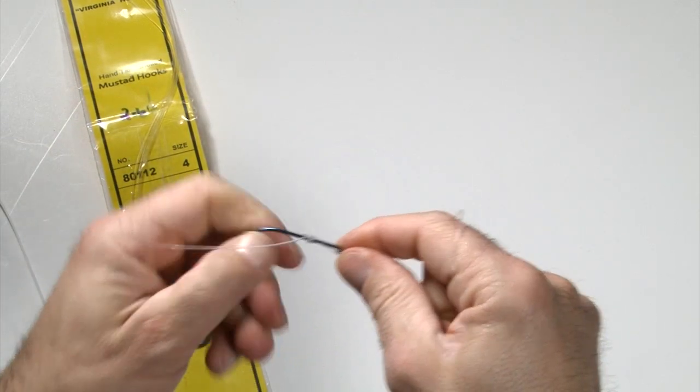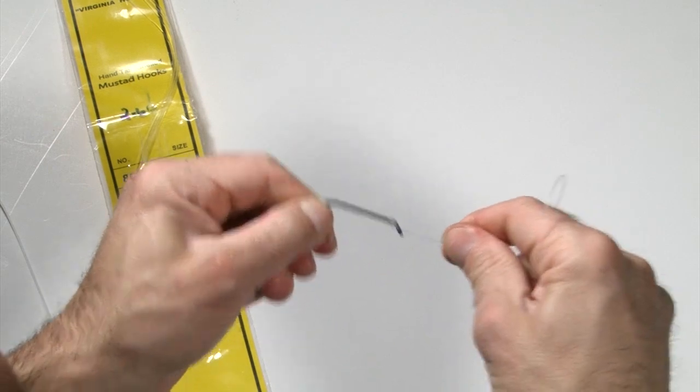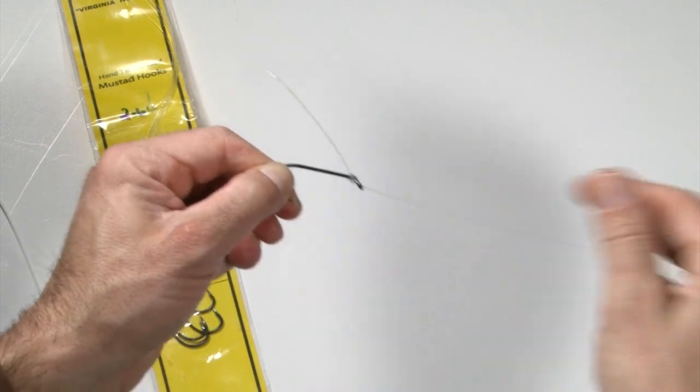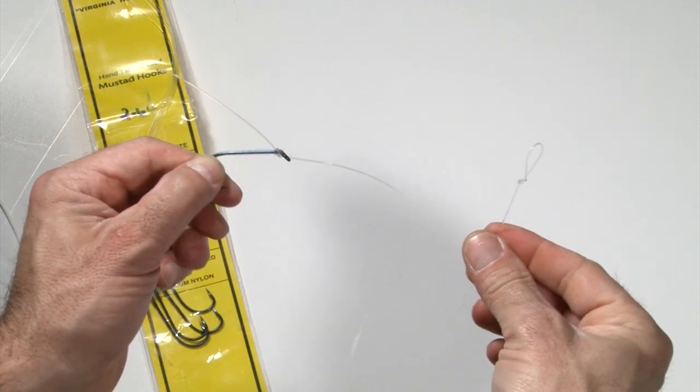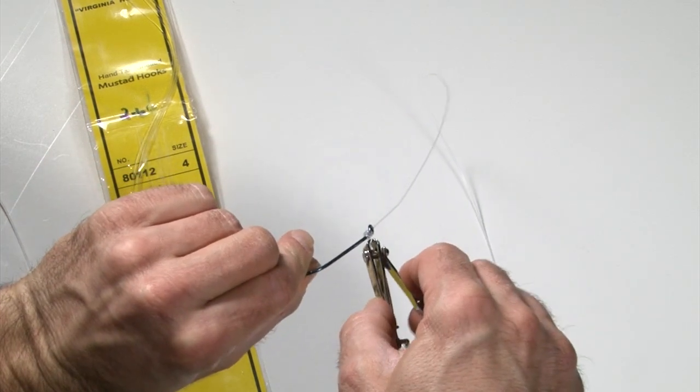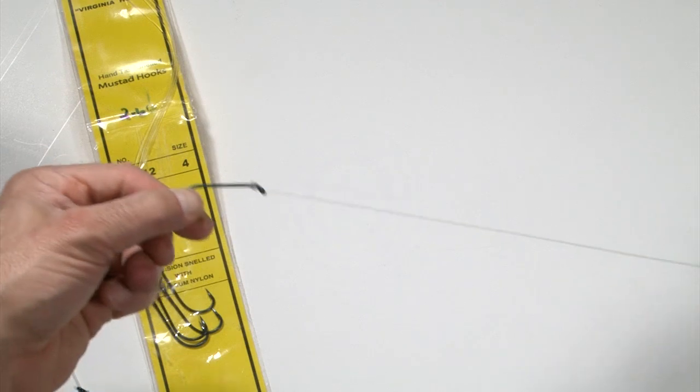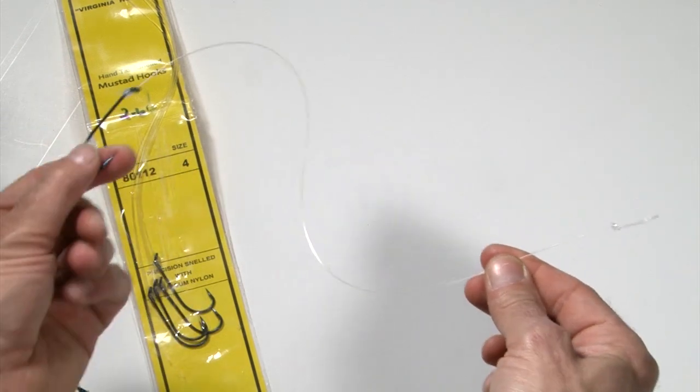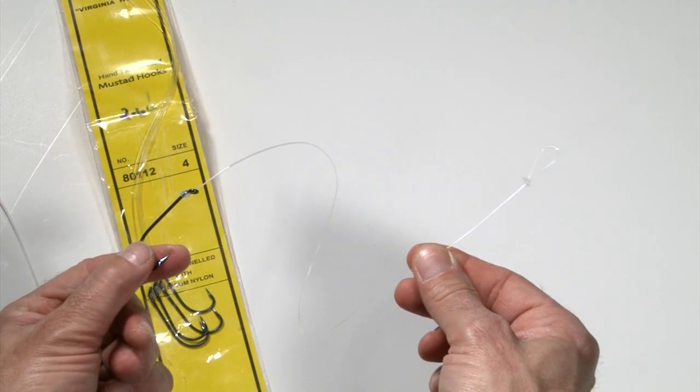I like to use my teeth. And there, just pull it forward. And there's your snell rig. Just cut the tag end and you're all set. Now you got a snelled rig with a loop on the end.